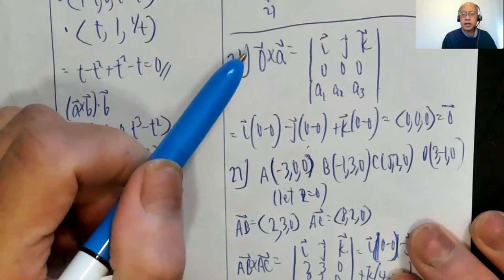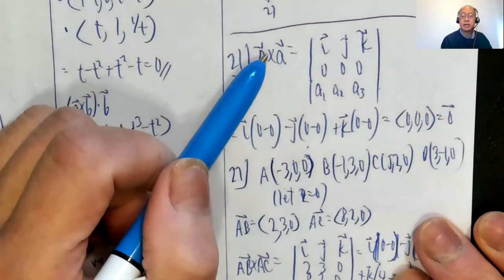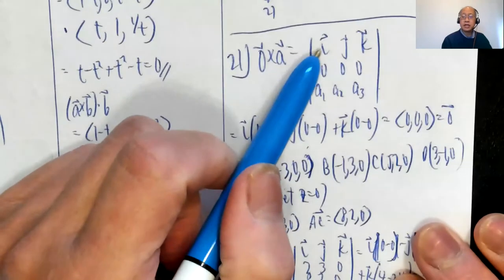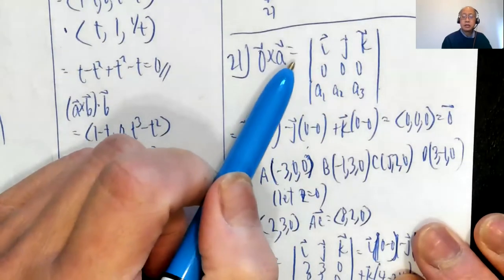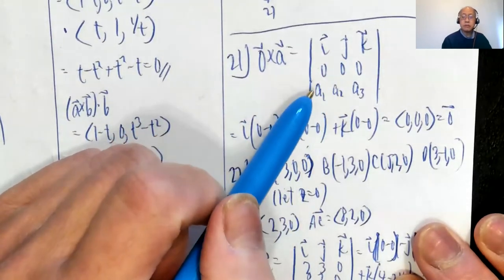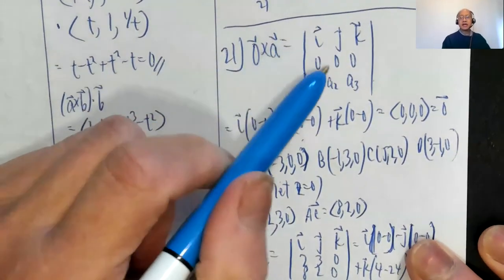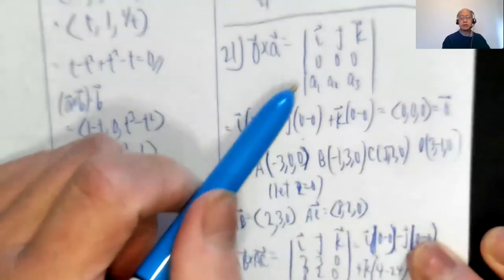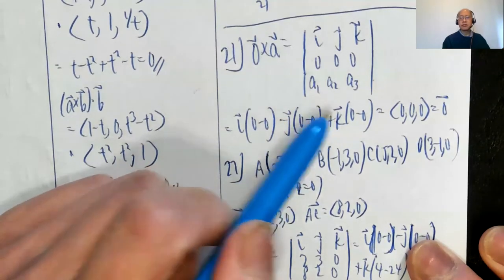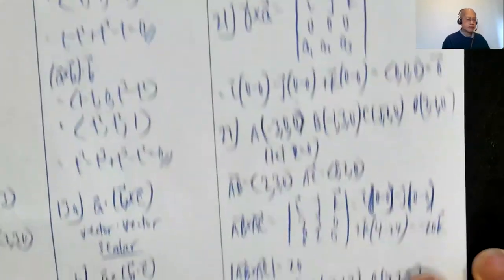Problem 21: prove that the zero vector cross A is the zero vector. Set up the determinant with i,j,k on top, 0,0,0 in the second row, a1,a2,a3 in the third. Every 2×2 minor has a row of zeros, so i(0-0) - j(0-0) + k(0-0) = (0,0,0), the zero vector.